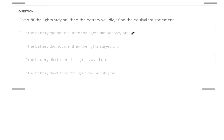We're told if the light stays on, so we'll call the light being on event P, and the battery will die. So if the light is on, that leads to the battery dying.